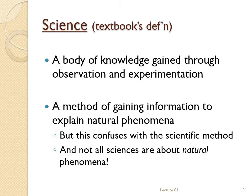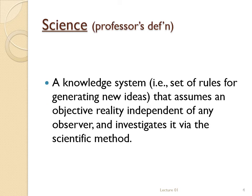My preferred definition of science is a bit more philosophical than the textbook, but it highlights several aspects that are very important for understanding physical anthropology. Science is a knowledge system that assumes an objective reality independent of any observer and investigates it via the scientific method. The larger category that science belongs to is 'knowledge system' — a general term for any set of rules for determining whether a statement is true or false. Other knowledge systems include mathematics, religion, tradition, or even intuition. Where science differs from other knowledge systems is the rest of the definition: science assumes an objective reality independent of any observer.